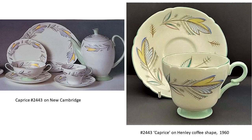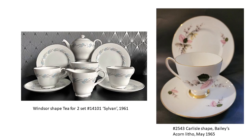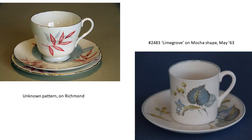Going back: this is Caprice, a stylised nature pattern on New Cambridge and on Henley coffee shape. The shapes aren't quite as mid-century modern, but the design really carries it off. A Windsor shape T-for-two with Sylvan on the left from 1961. On the right there's a Carlisle shape with Bailey's acorn litho — that's much more nature than fits my criteria exactly, but the colours are so muted and lovely. On the left there's an unknown pattern on Richmond — very mid-century modern. And Lime Grove on Mokka on the right — the colours are really beautiful muted colours.